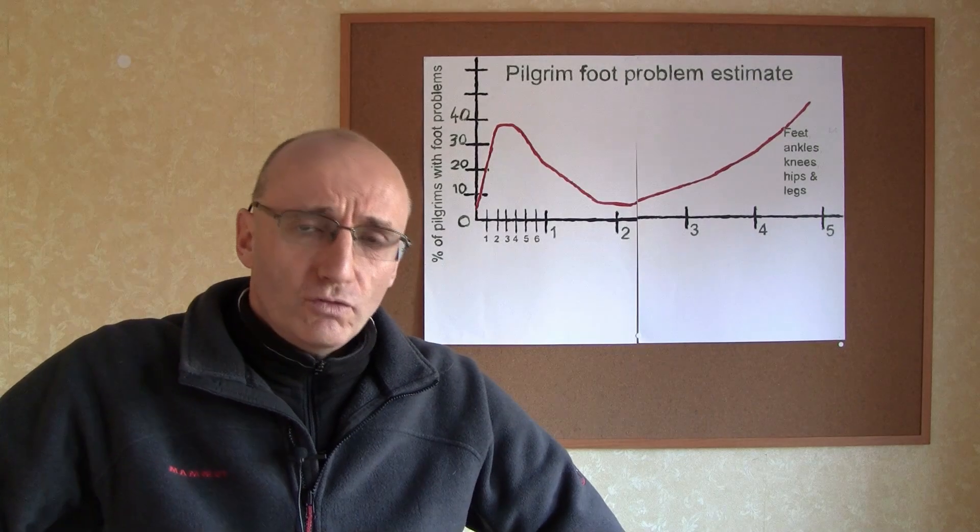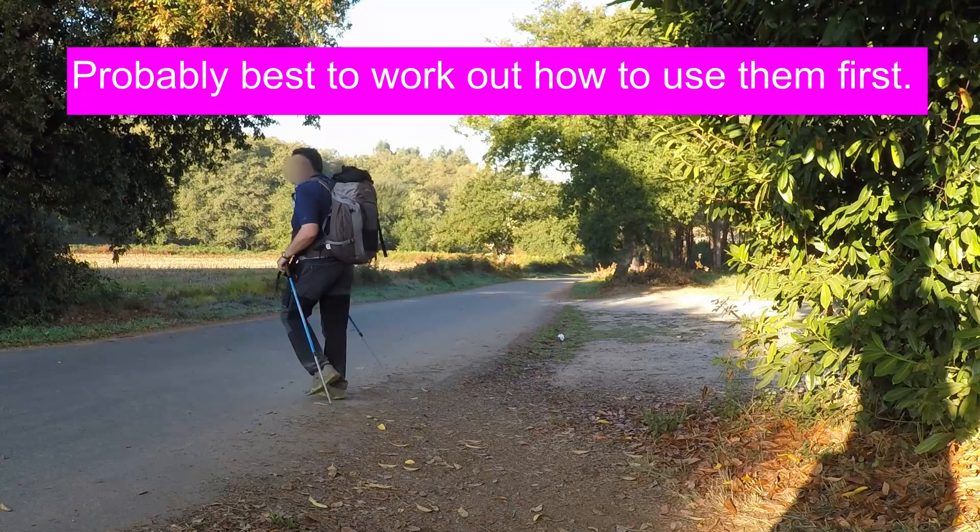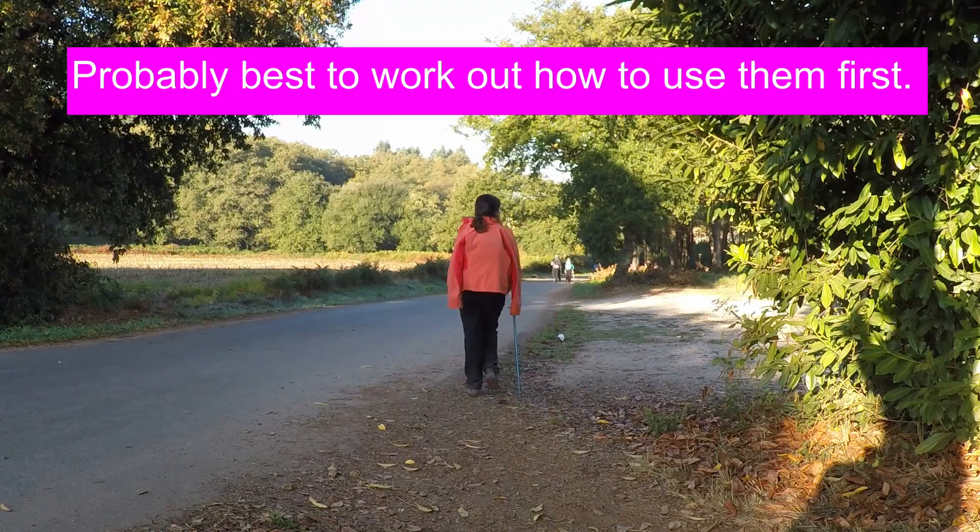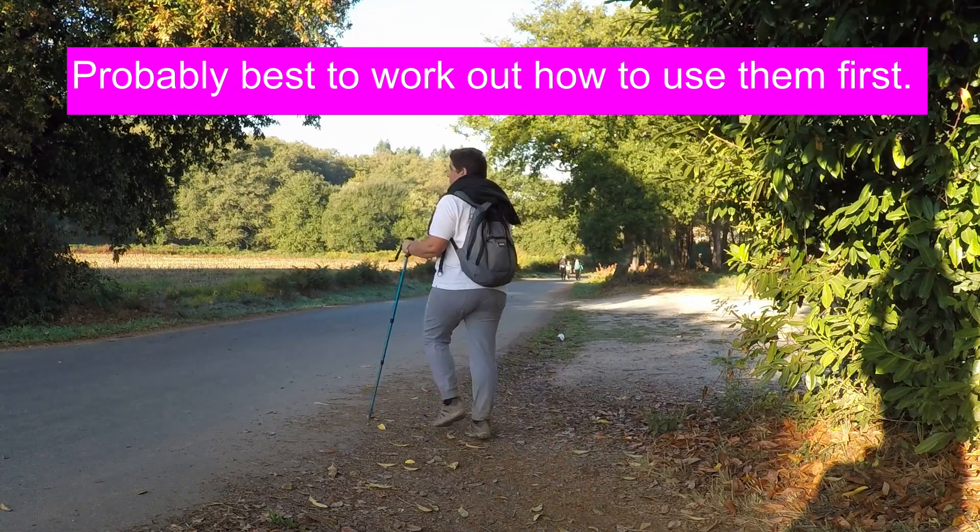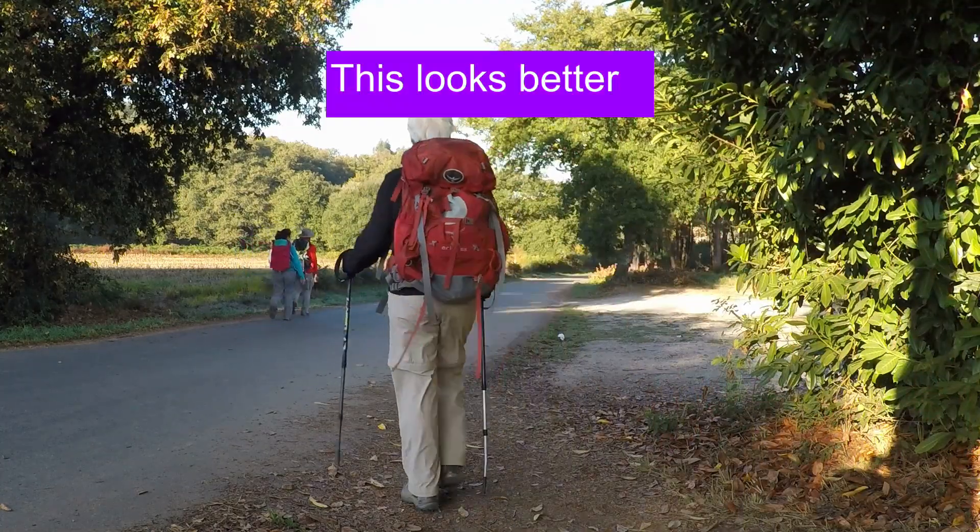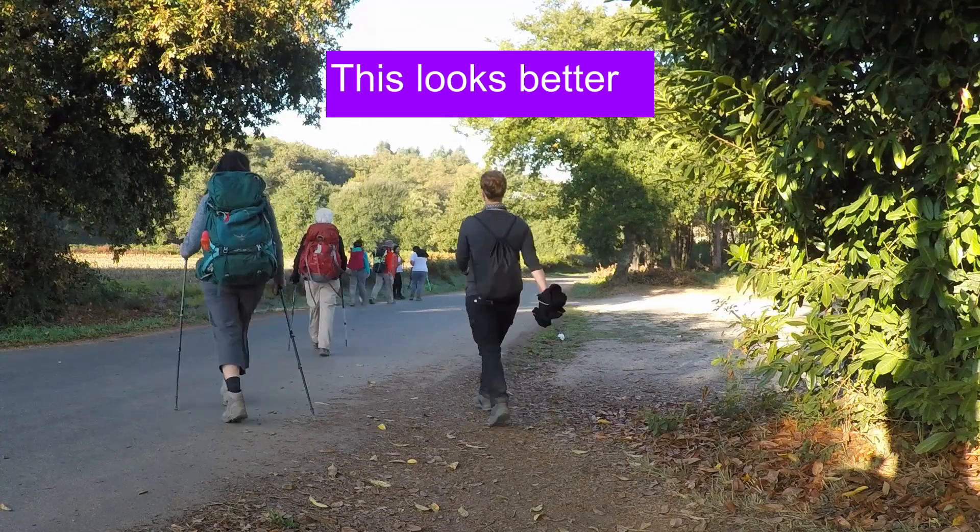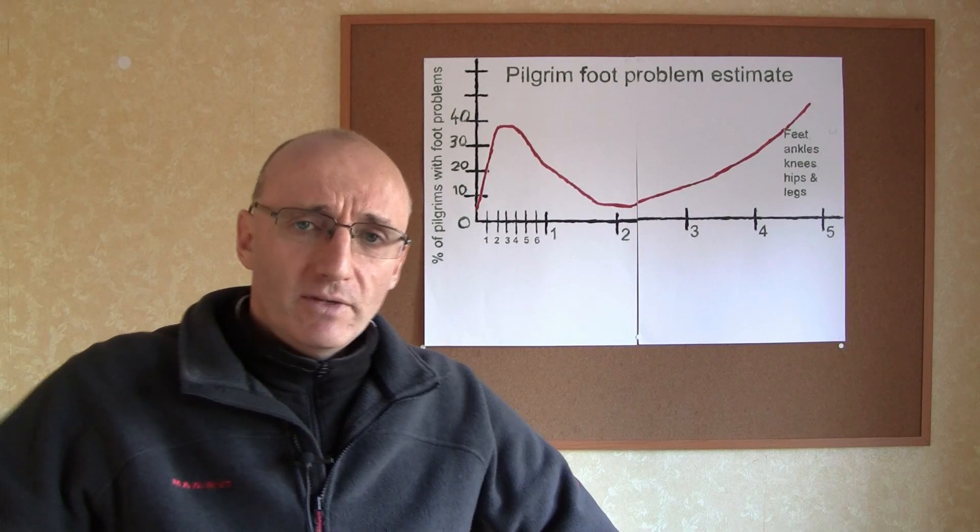A second thing you could do would be to take trekking poles. Lots of people I met along the Camino said that using them greatly reduced the amount of weight and strain on their feet. One man said he had terrible blisters but he was able to walk by using his trekking poles. If you're going to walk more than a million footsteps, anything you can do to reduce the strain and the weight on your feet and ankles and knees is definitely worth doing.